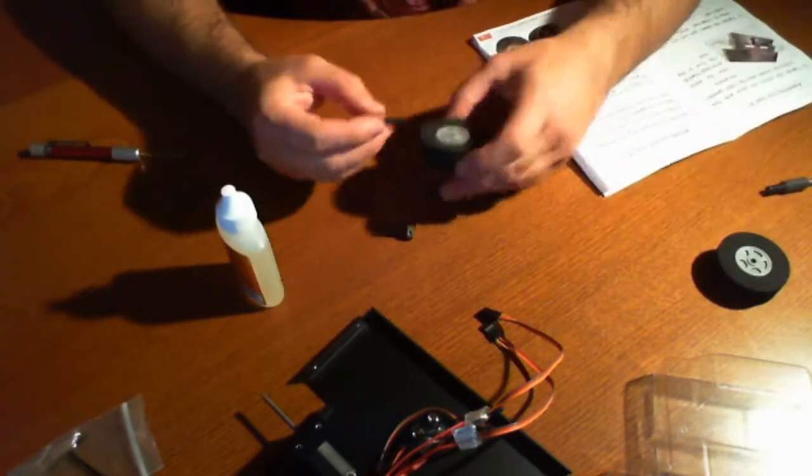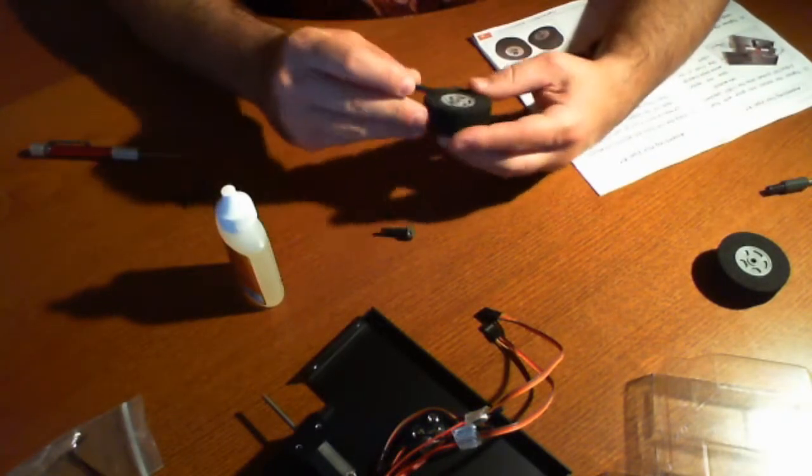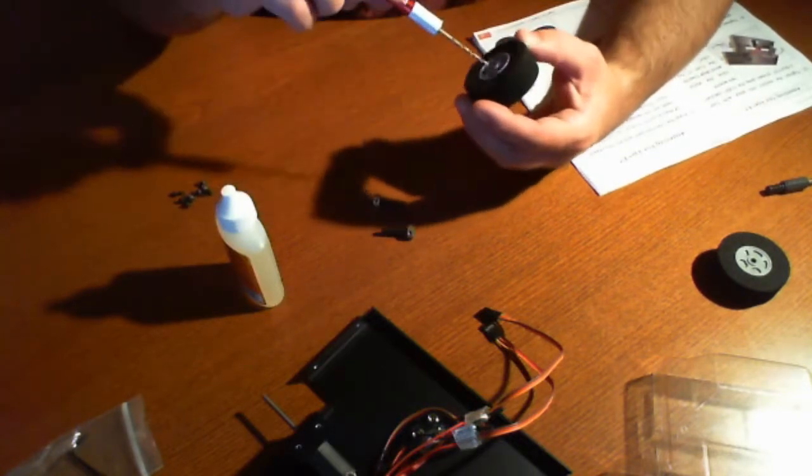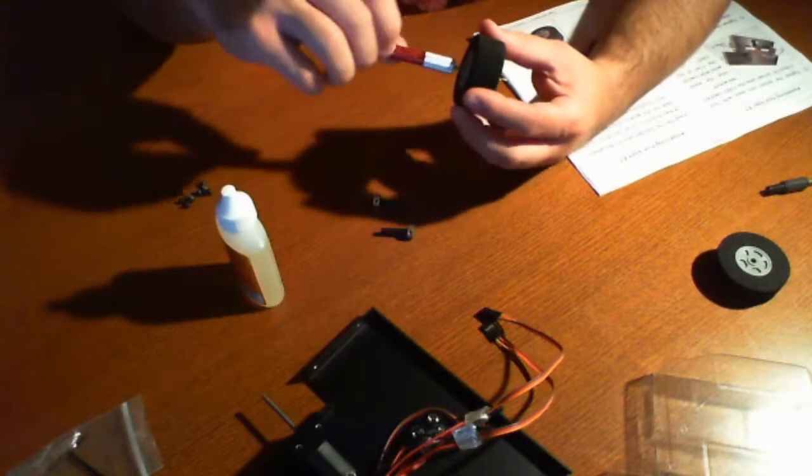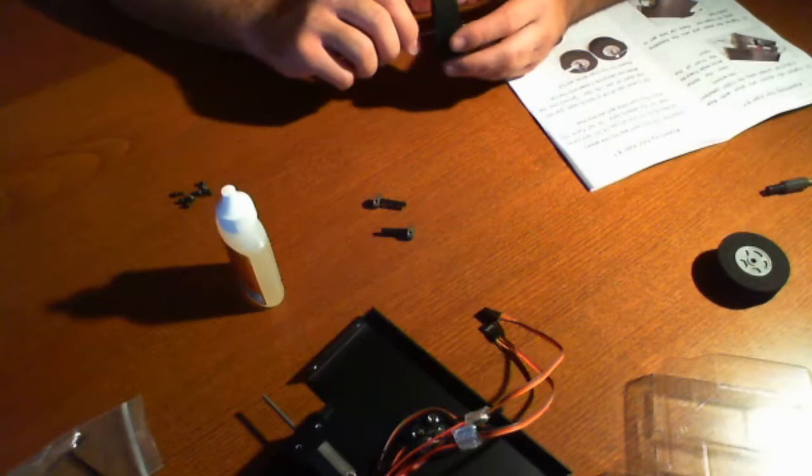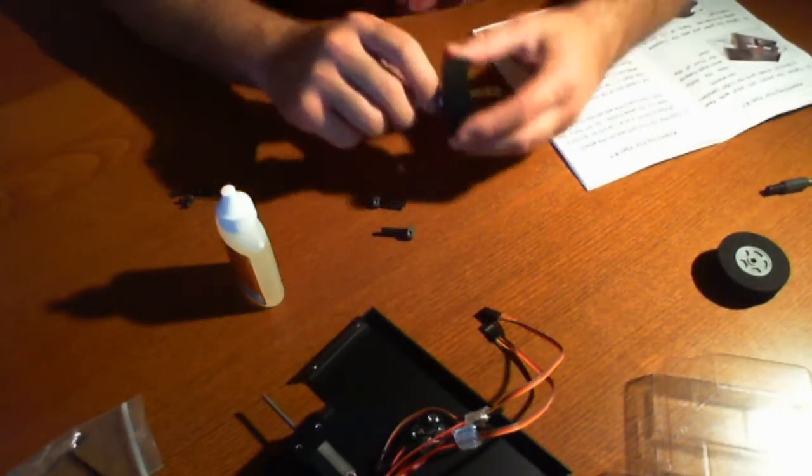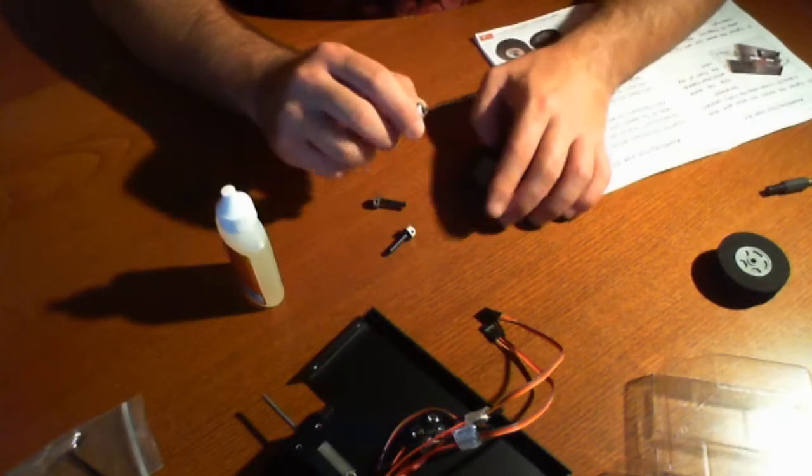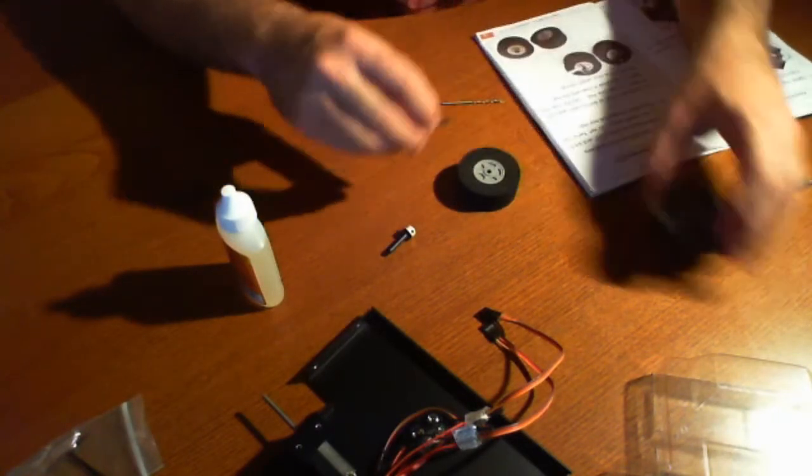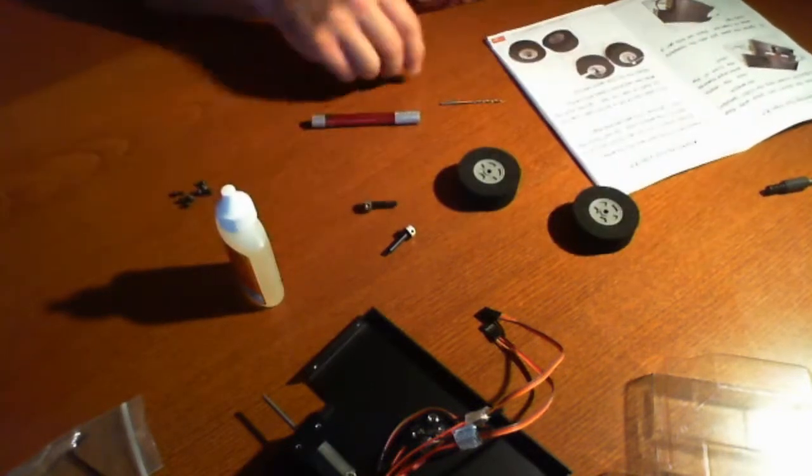Now the reason we know we need this is because earlier on we tried to slip one of these hubs into the wheels and we couldn't. So they said go ahead and use the drill bit to kind of make it a little bit bigger. Now it looks like this is not big enough, so we're going to have to get a bigger bit.